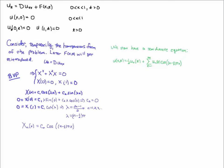We're now going to plug this in to the solution. Remember when we've done separation of variables before, we had an X times a T component. I've taken that time component and I'm calling it u_n(t). This is what our solution looks like as a Fourier expansion. Now we're going to take this solution and substitute it into the PDE.